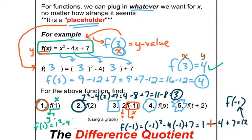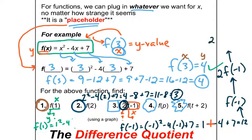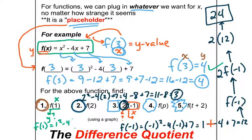Now what do we do with that 2 out front? It is multiplying. So we're going to take our answer and multiply it by 2. That means 2 times f of negative 1 is 2 times 12. So my real answer to number 3 is 24. 2 times f of negative 1 is equal to 24.